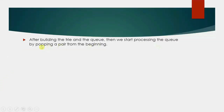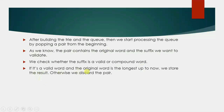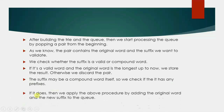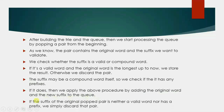After building the tree and the queue, we start processing the queue by popping a pair from the beginning. The pair contains the original word and the suffix we want to validate. We check whether the suffix is a valid or compound word. If it's a valid word and the original word is the longest so far, we store the result; otherwise we discard the pair. If the suffix may be a compound word itself, we check if it has any prefixes. If it does, we add the original word and the new suffix to the queue. If the suffix is neither a valid word nor has a prefix, we discard the pair.